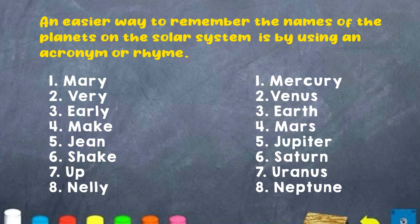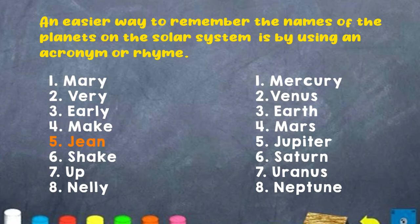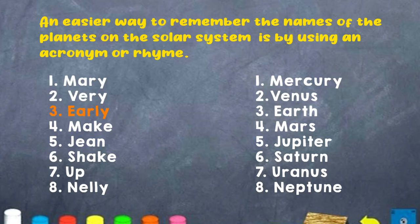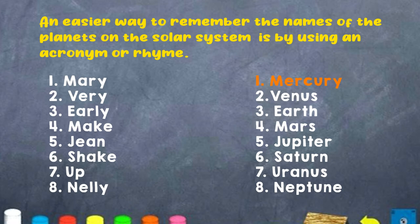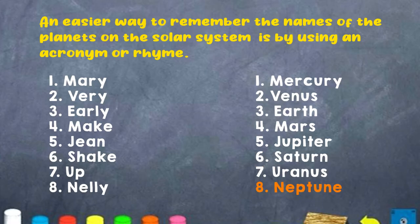The second rhyme is: "Mary, very early, make Jean shake up Nelly." Again, boys and girls, it is representing Mercury, Venus, Earth, Mars, Jupiter, Saturn, Uranus, and Neptune.